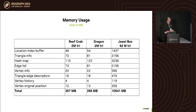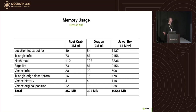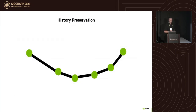A few performance numbers: for typical examples like the reef crab and dragon at around two million triangles, you need about 400 megabytes of video memory. For the most complex case — 62 million triangles — you need about one gigabyte of GPU memory, which is still very manageable.